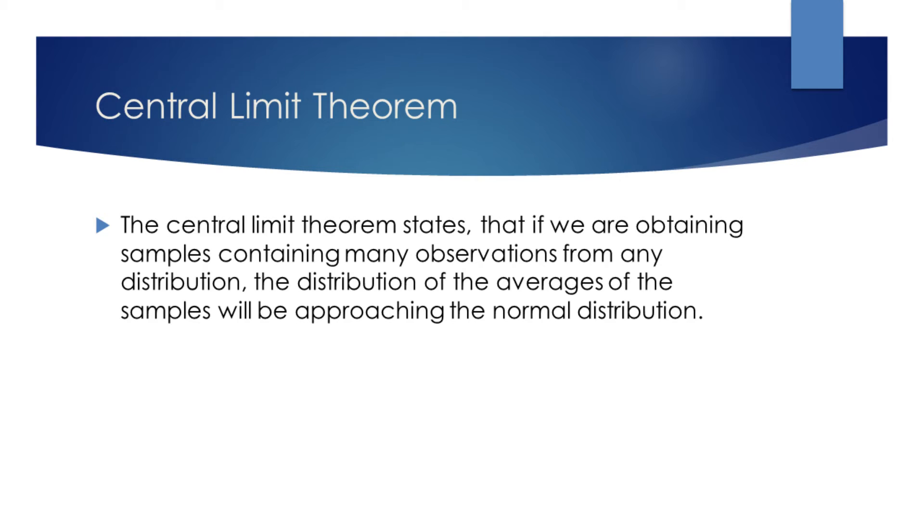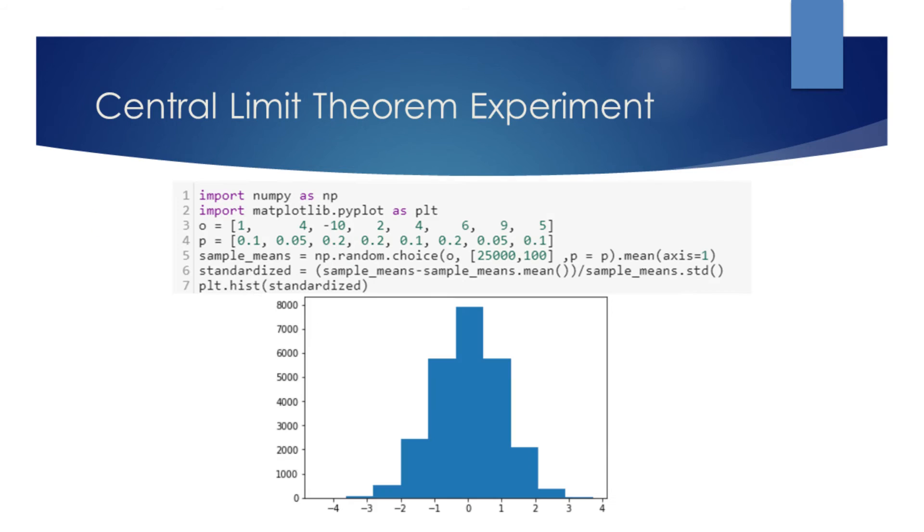Let's now conduct an experiment and show this is true. We will have a sample space of eight outcomes given by the third line of the code. The corresponding probabilities of the outcomes will be given by the fourth line of the code. For example, the probability of outcome to be minus 10 will be 0.2.